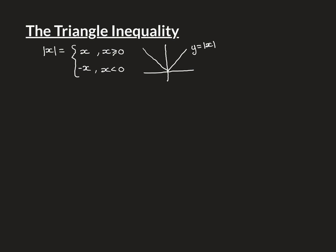The triangle inequality says that if you take the mod of two real numbers x and y added together, that is less than or equal to the mod of x plus the mod of y. That simple inequality is the triangle inequality, and we're going to understand and prove this in the remainder of the video.